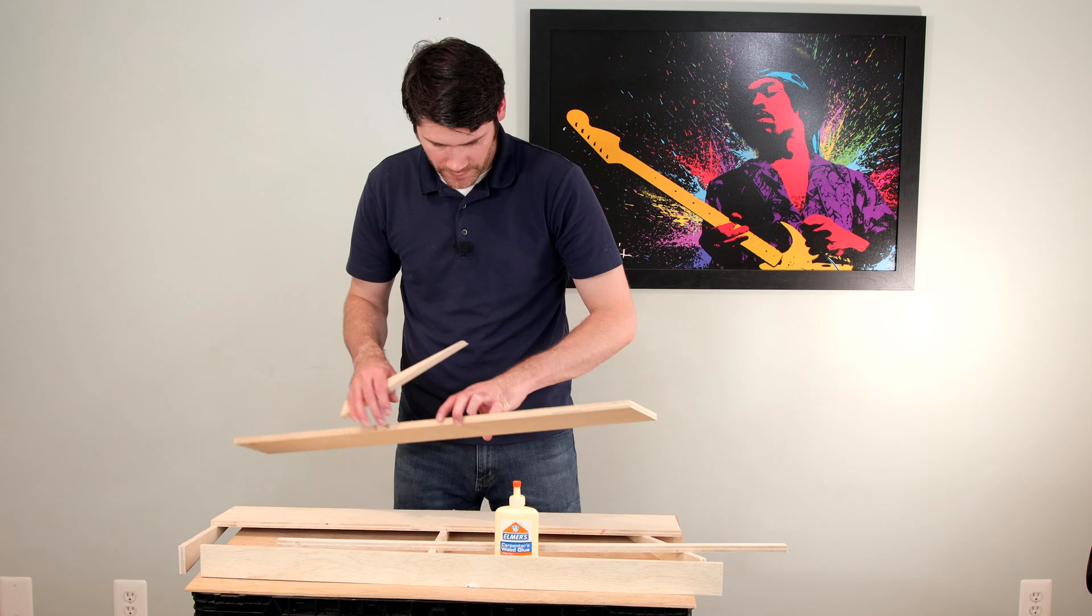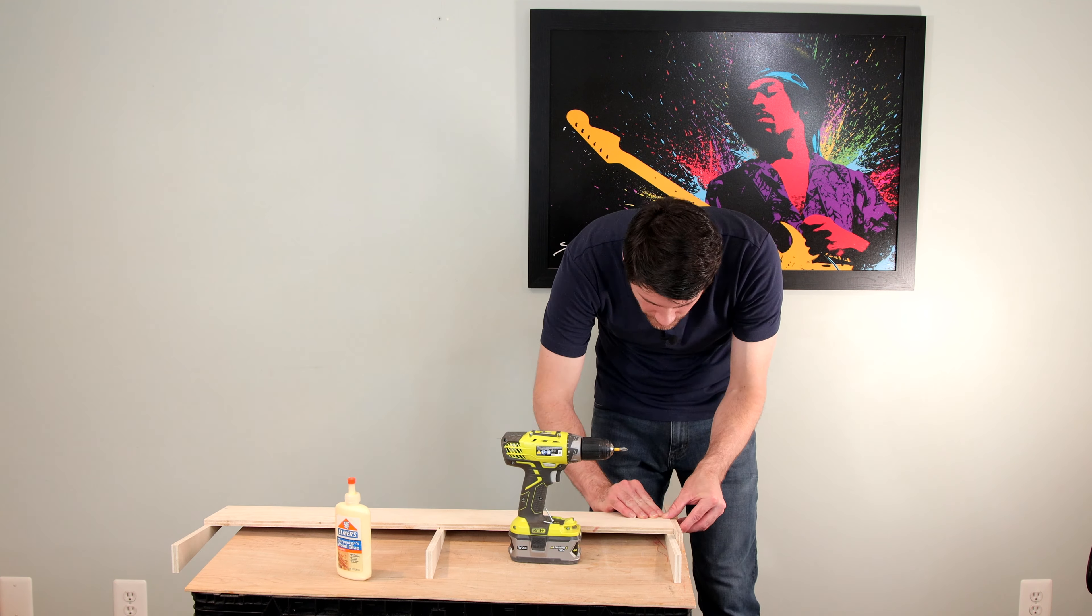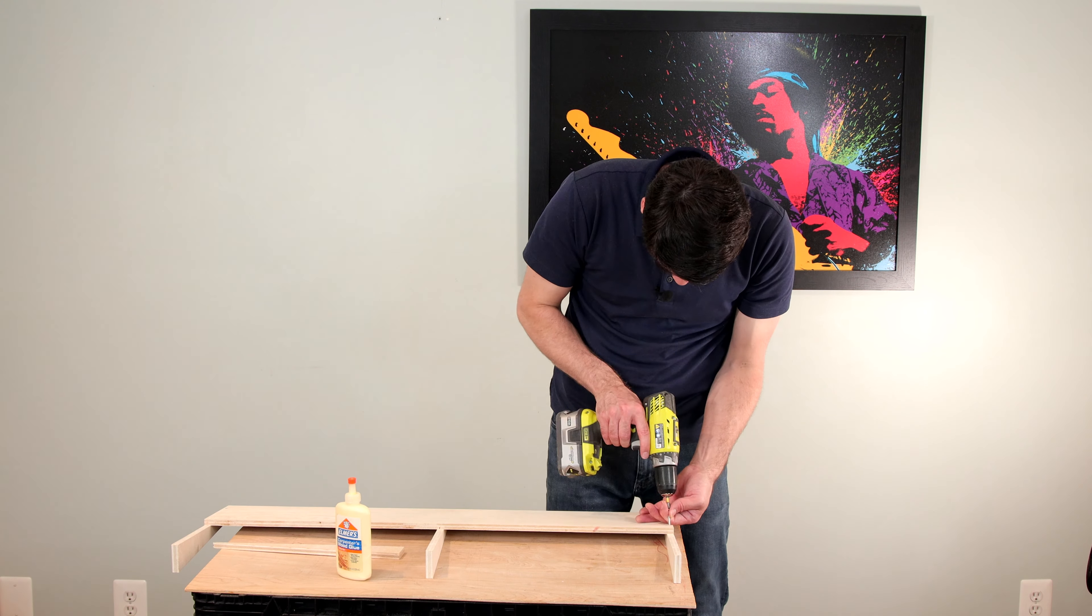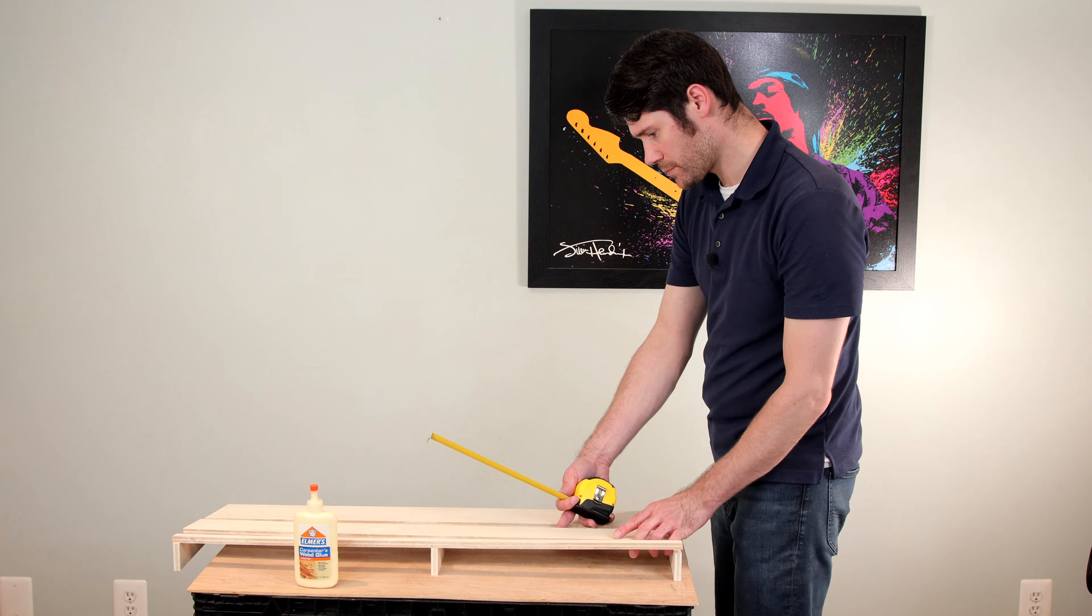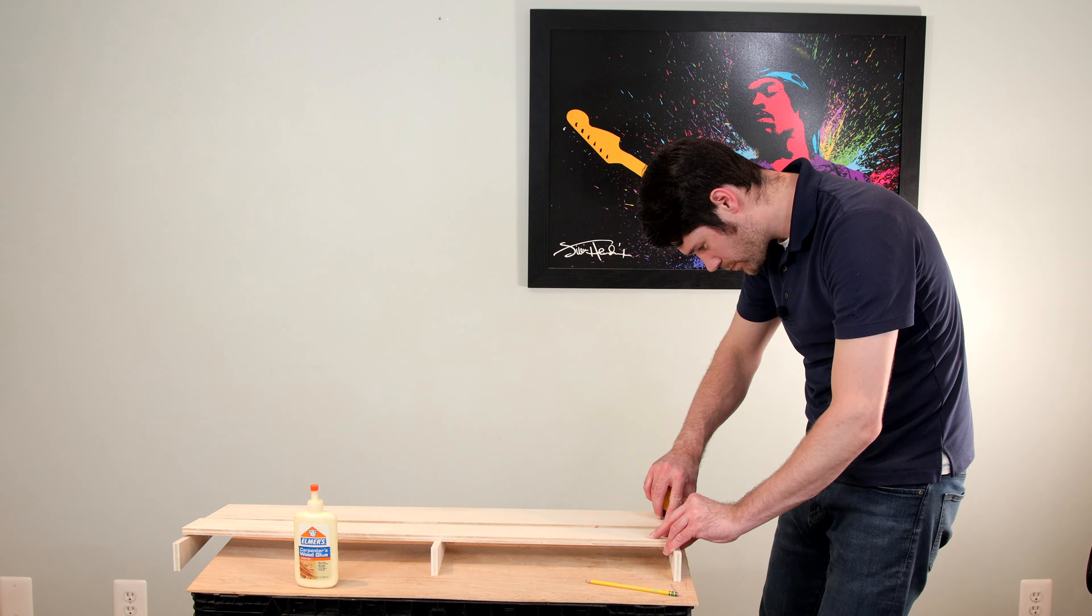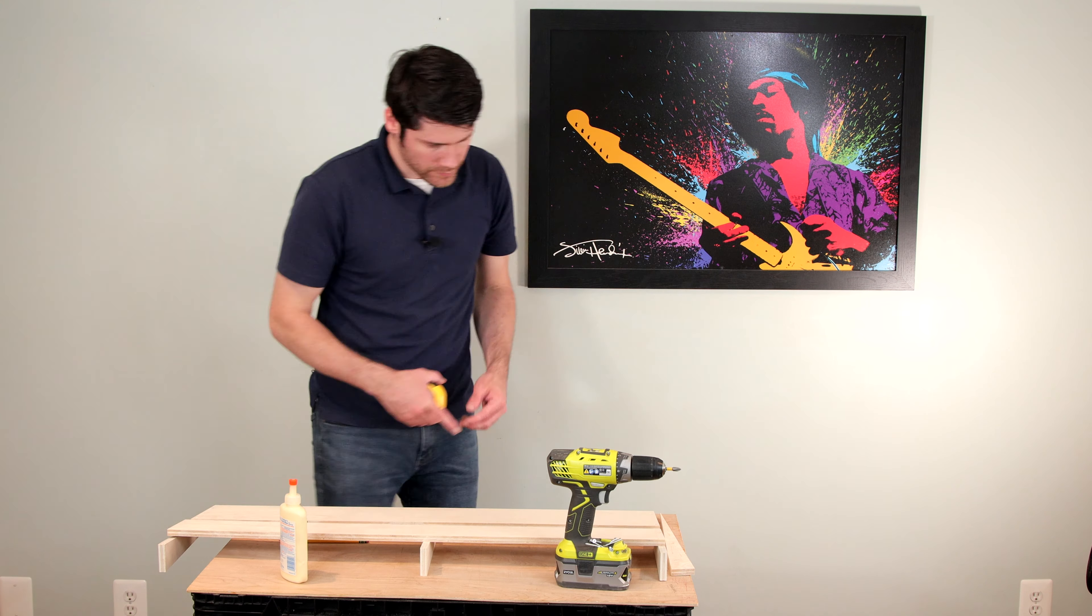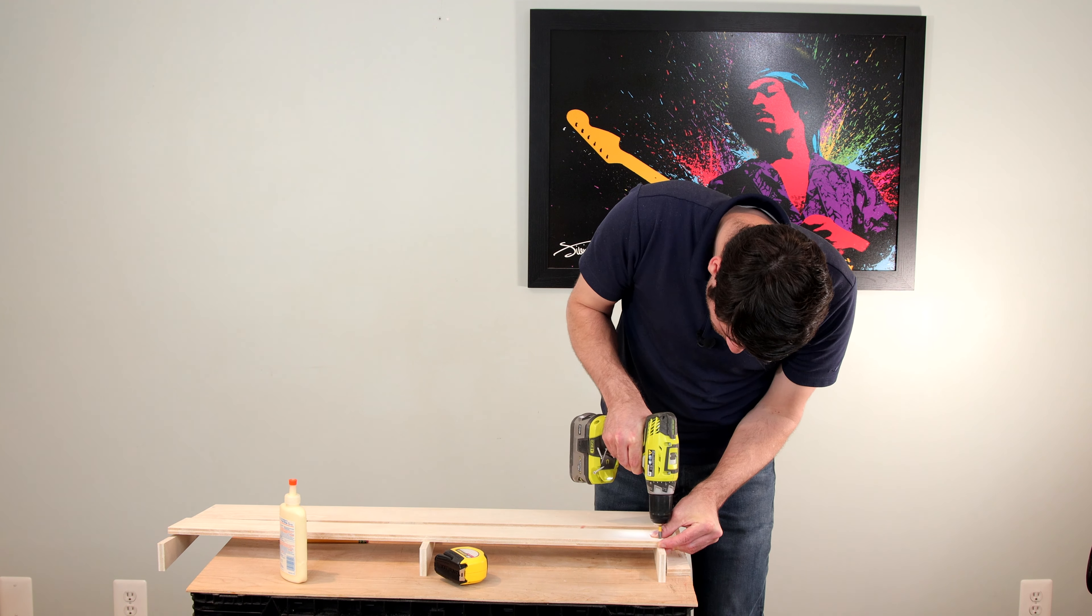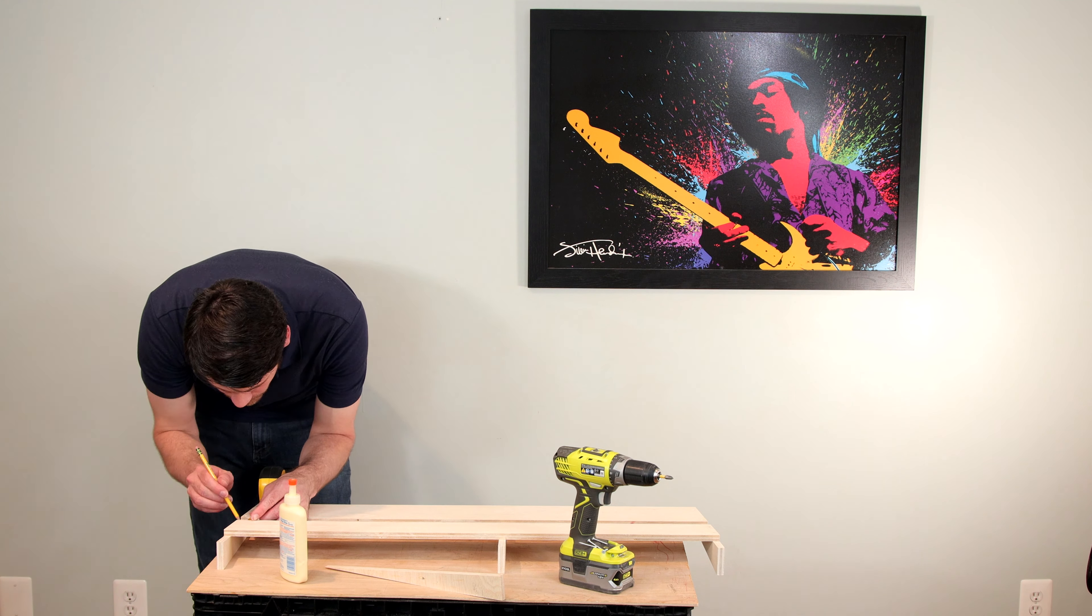To glue the rails to the feet, I am marking the depth of the rails on them so I have a clearly defined area to glue. After gluing, I use a scrap piece of wood to ensure a flush match of the rail to the foot and then screw it in to secure it. Gluing one foot up, moving it across to the other side, and then doing the center last.